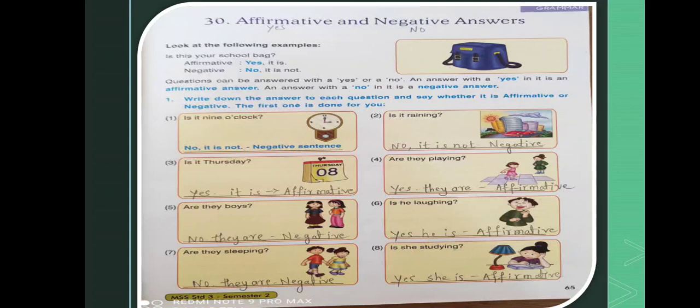Second one. It is raining. No it is not. Negative. Third one. Is it Thursday? Yes it is. Affirmative. Fourth one.